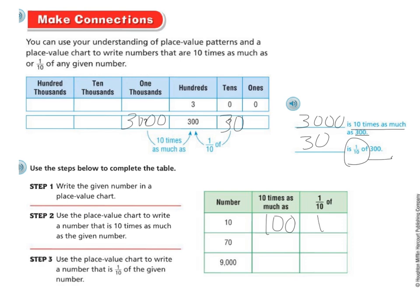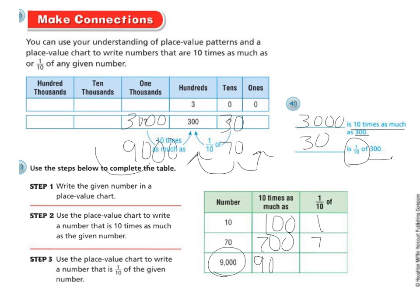Now with 70: 10 times as much is 700, and 1 tenth of 70 is 7. For 9,000: 10 times as much is 90,000, and 1 tenth of 9,000 is 900. I want you to do the on-your-own problems — I will be on the carpet if you need help. I'm also assigning the math trainer online, which can help you through the math on the spot video for the next segment of Share and Show. Good luck.